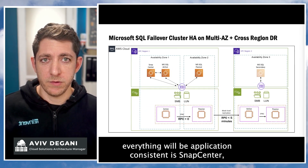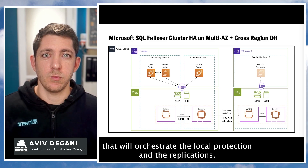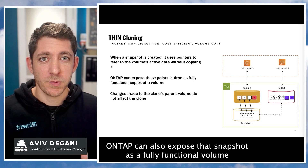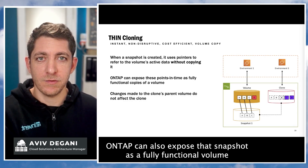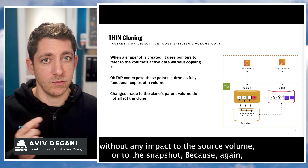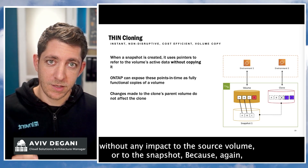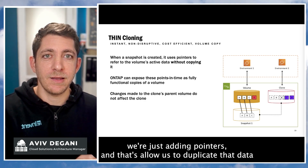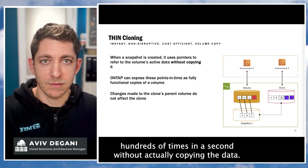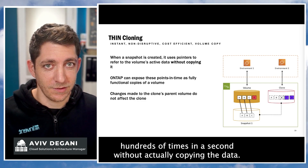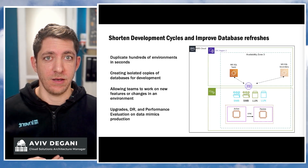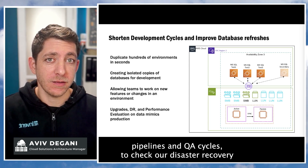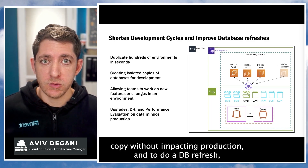SnapCenter will orchestrate the local protection and the replication to make sure everything is application consistent. ONTAP can also expose a snapshot as a fully functional volume with no impact to the source volume or to the snapshot, because we're just adding pointers. This allows us to duplicate that data hundreds of times in a second without actually copying it — duplicating environments in seconds, accelerating our pipeline and QA cycles, checking our disaster recovery copy without impacting production, and doing a DB refresh super easily.